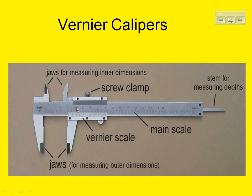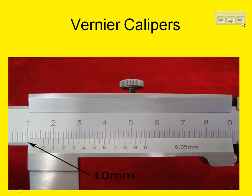Or you could be using the stem to measure the depth of a hollow cylinder. This is called the main scale. The vernier scale is this lower part. The screw clamp allows the jaws to remain in place while you make the measurement. Let me show you how to read a vernier caliper. The jaws have been placed around an object and the screw has been tightened, and now we're ready to make a measurement.